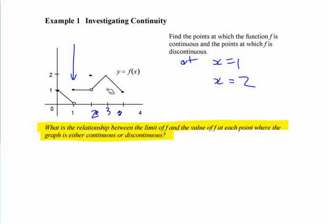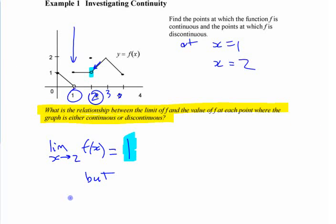The only two places on this graph where the value turns out to be not what you expect is at one and two. At two, if I come from the left or come from the right, what does it look like it should be here? It looks like it should be one. In other words, the limit as you approach two from the right or the left, the limit as you approach two of that function is one. The limit is one.